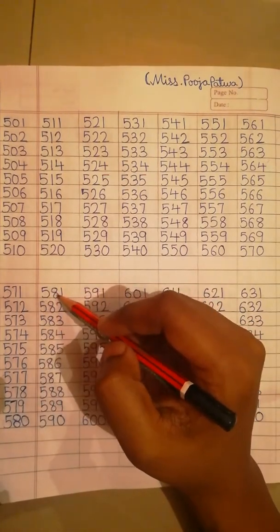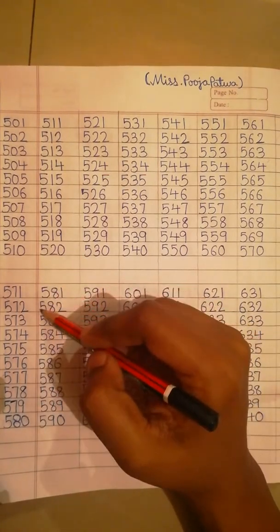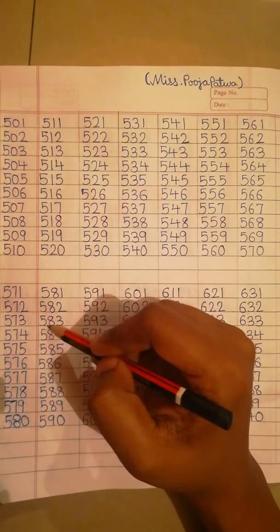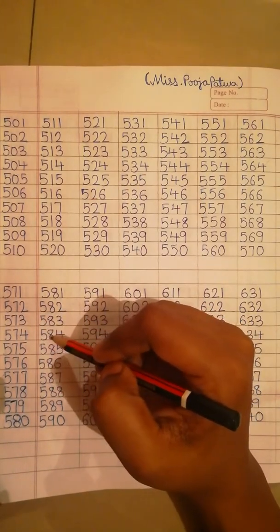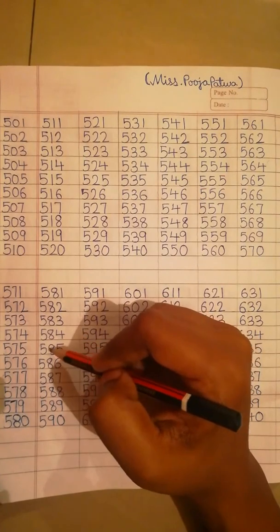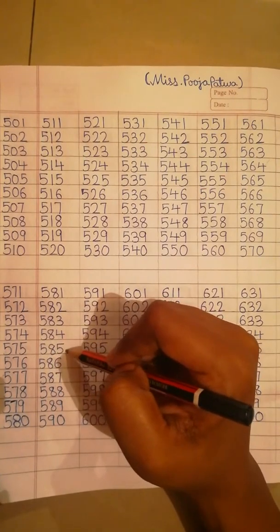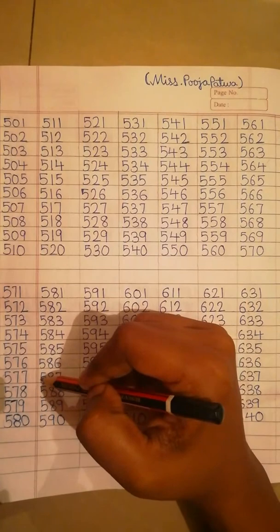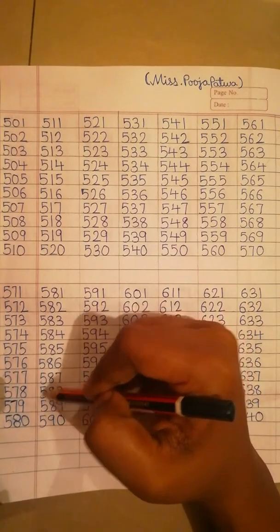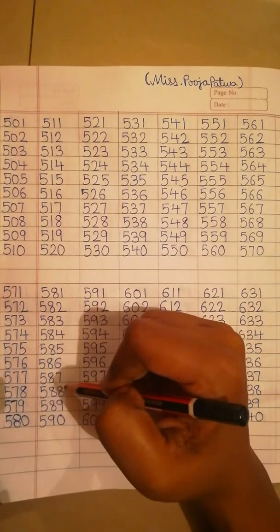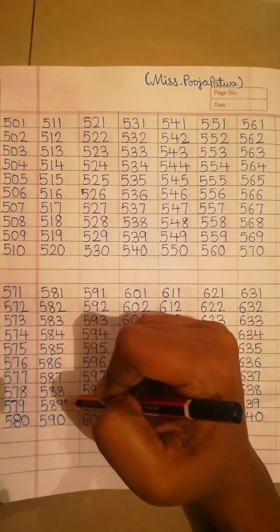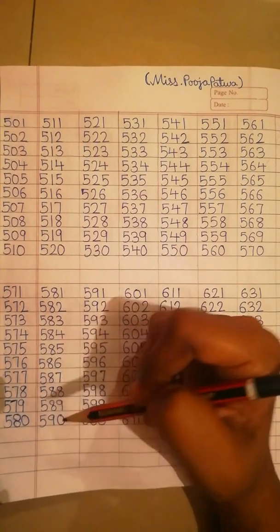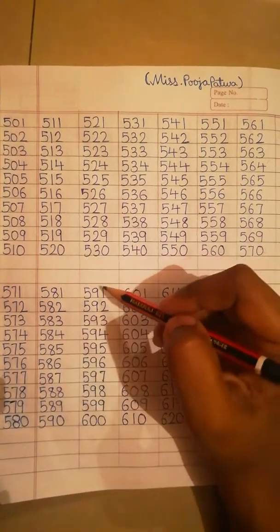581, 582, 583, 584, 585, 586, 587, 588, 589, 590. Next line.